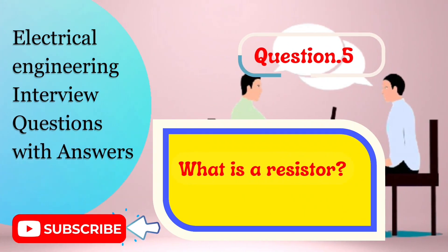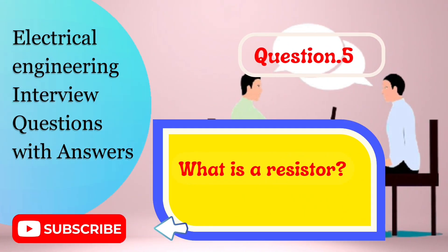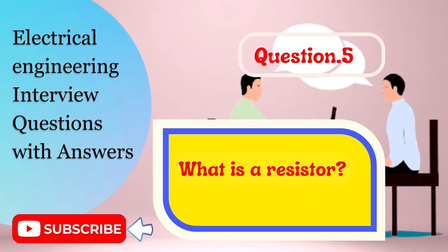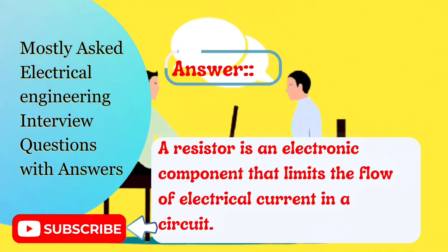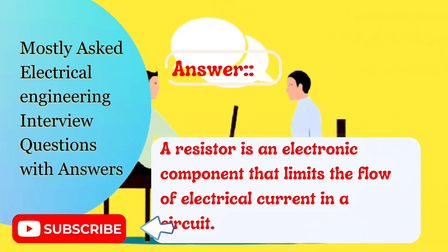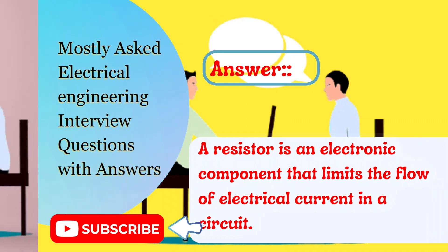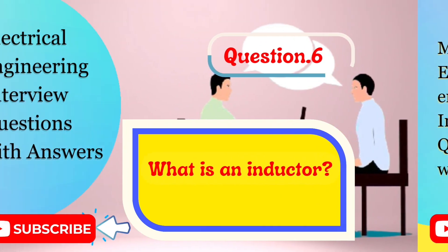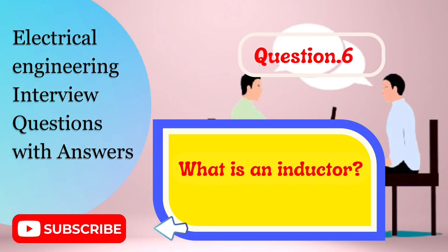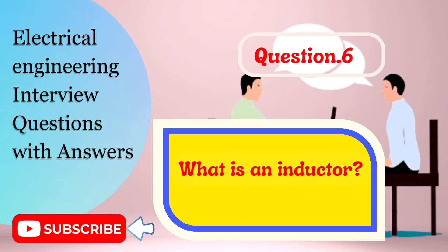Question 5: What is a resistor? A resistor is an electronic component that limits the flow of electrical current in a circuit. Question 6: What is an inductor? An inductor is an electronic component that stores electrical energy in a magnetic field.